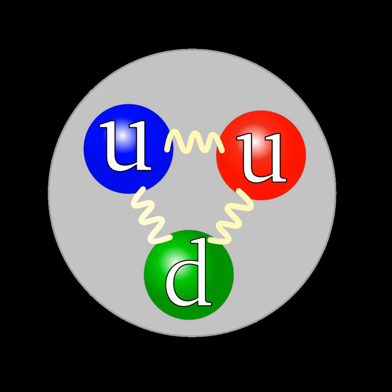Each baryon has a corresponding antiparticle known as an antibaryon in which quarks are replaced by their corresponding antiquarks. For example, a proton is made of two up quarks and one down quark, while its corresponding antiparticle, the antiproton, is made of two up antiquarks and one down antiquark.